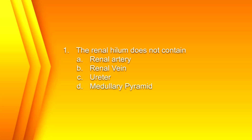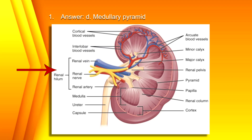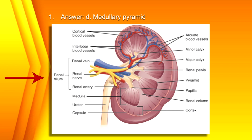Question 1. The renal hilum does not contain: A. The renal artery, B. Renal vein, C. Ureter, or D. Medullary pyramid? The answer is D. Medullary pyramid. As you can see here, we have the renal vein, the renal artery, the nerve, and the ureter going into the renal hilum.